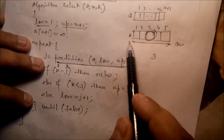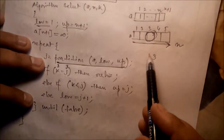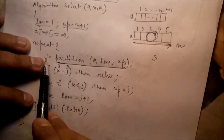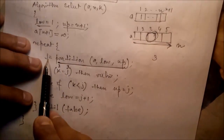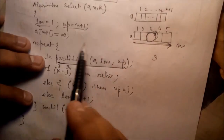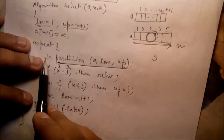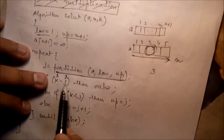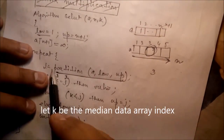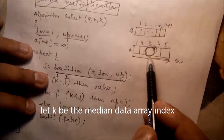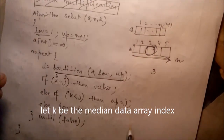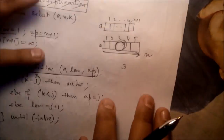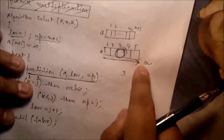By accessing all elements once, the partition algorithm returns index j, which is the median index. If j matches the expected median index K, then the value at position j is the median. There is no need to sort the whole dataset — by scanning the data just once we can get the median value.